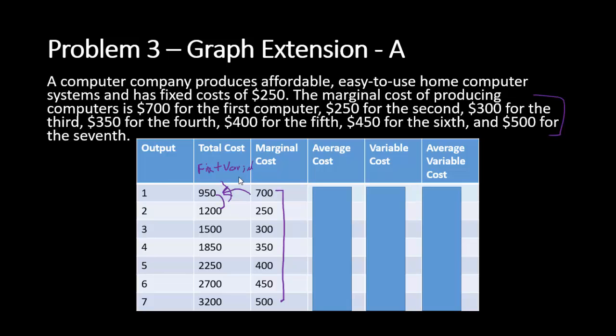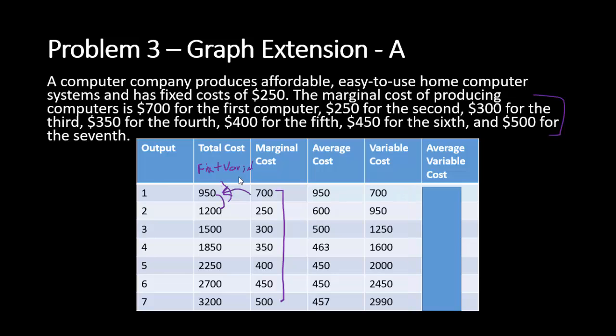We need to do the marginal cost calculation in reverse to calculate total costs. Once we have total cost, we divide it by the output level to get average cost, since average cost equals total cost divided by output. Variable cost equals total cost minus fixed cost. Average variable cost equals variable cost divided by output. That's part A of problem three.